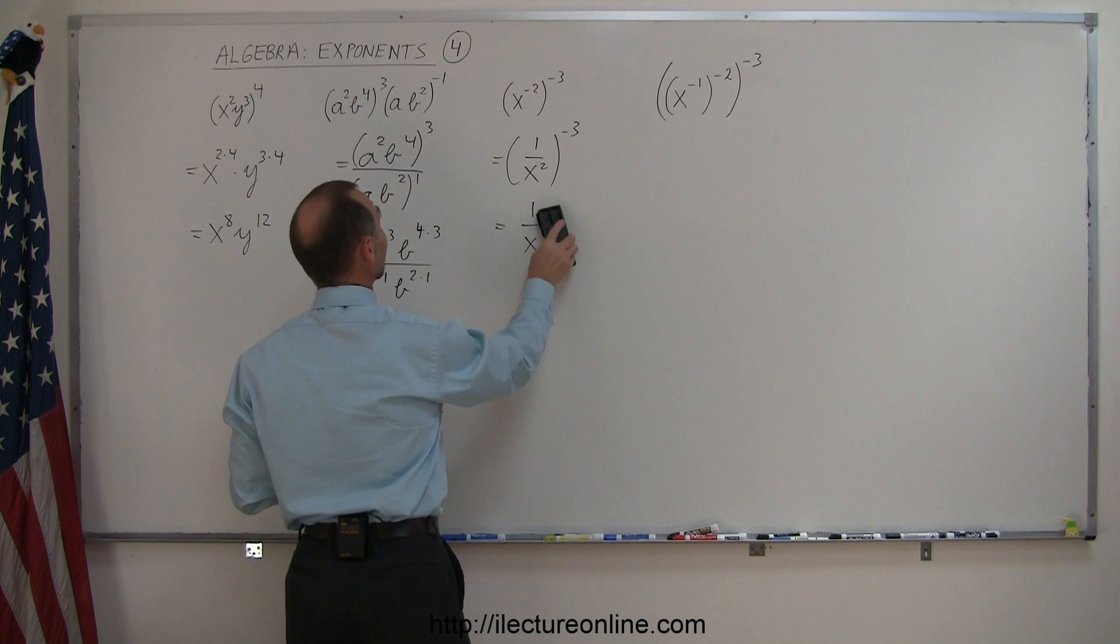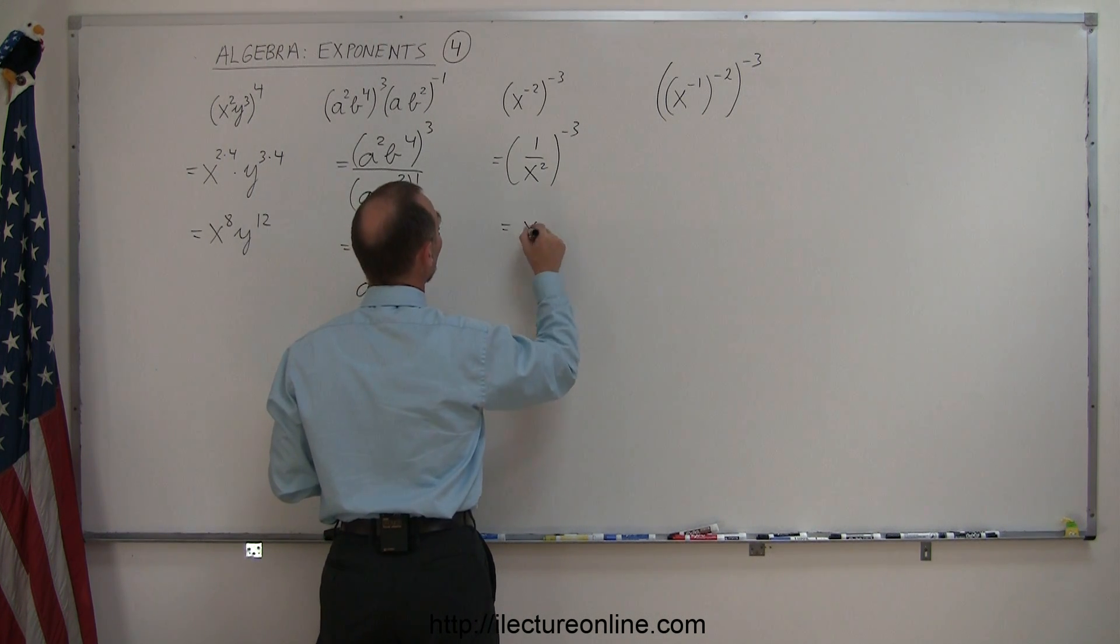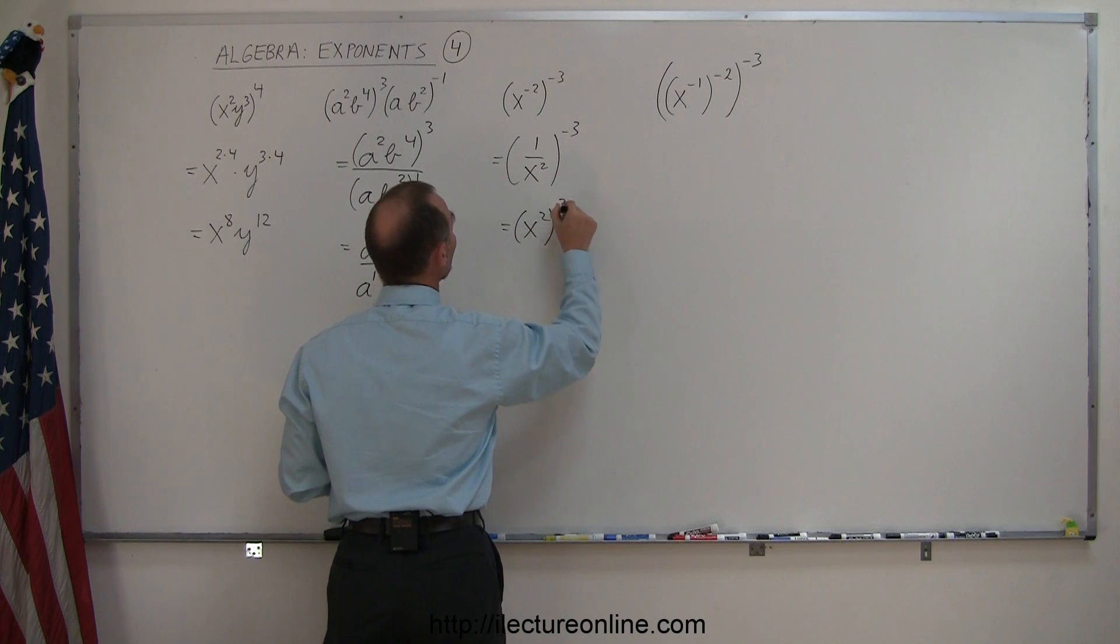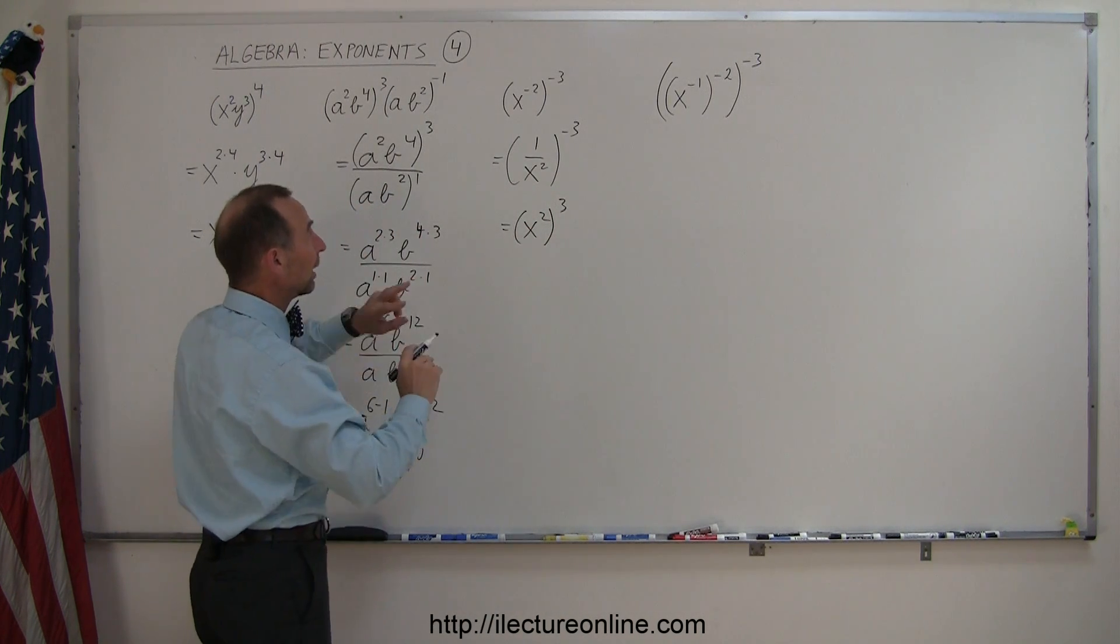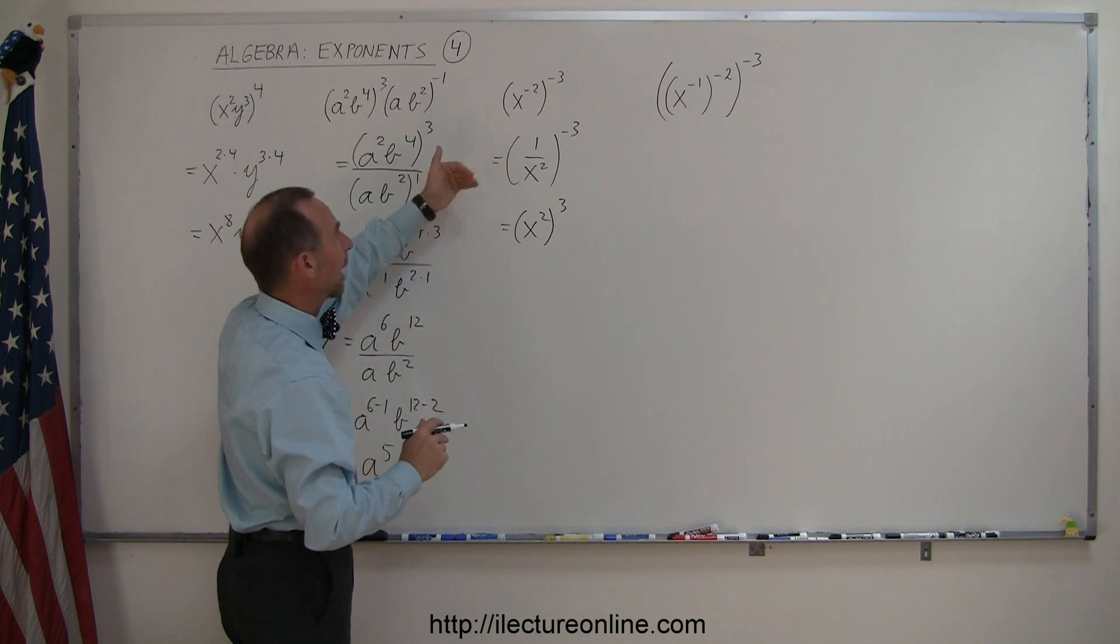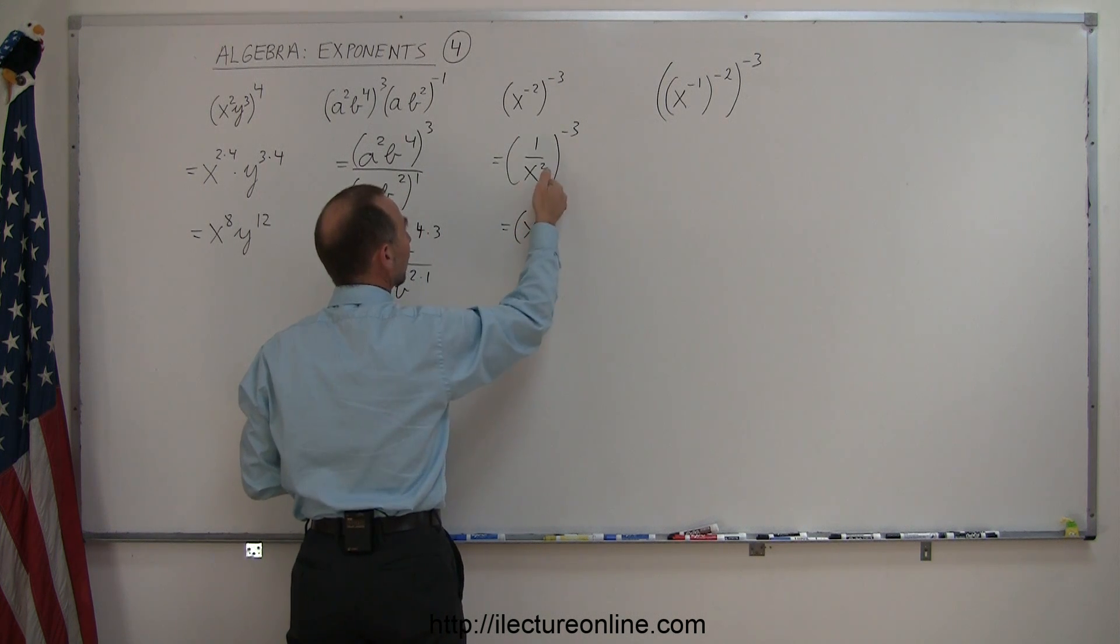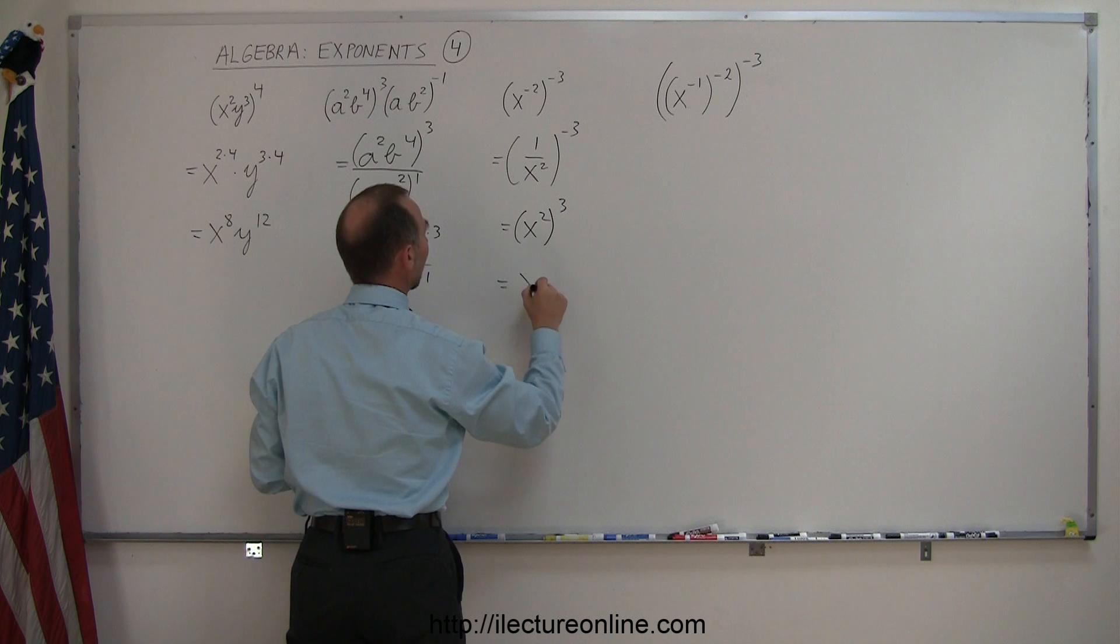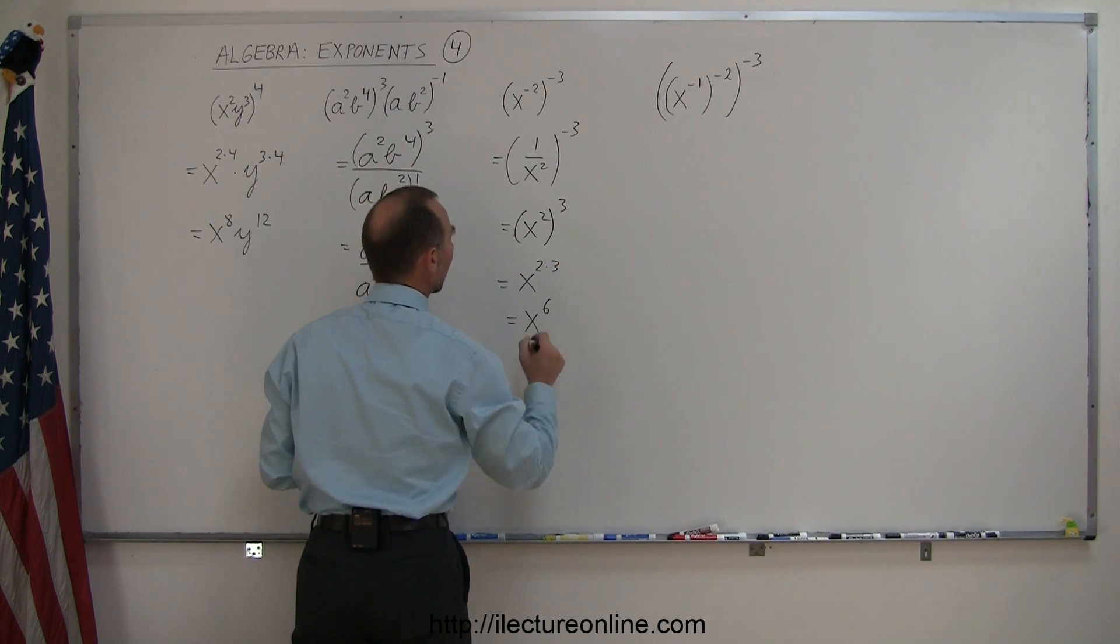So this is equal to x squared to the positive 3 power. So notice that each time I change the sign in the exponent it actually flips over the number or brings the number to the denominator, brings it back to the numerator. So when I apply this negative sign over here, this brings the x squared in the denominator back to the numerator. Now I can write this as x to the 2nd power times 3, or x to the 6th power.